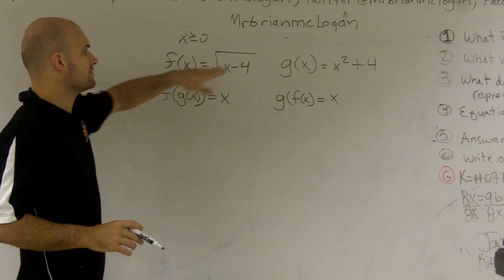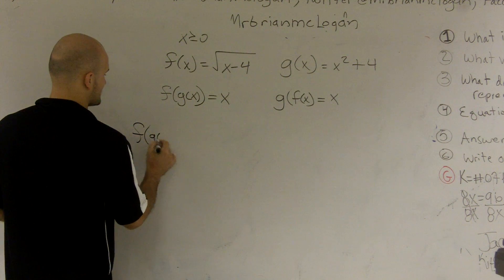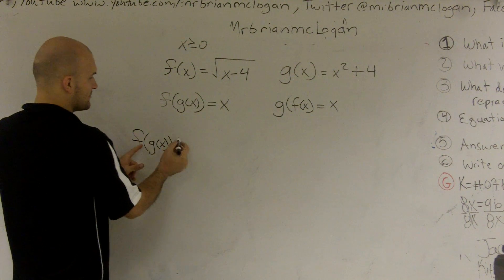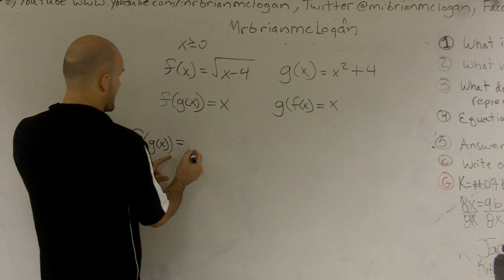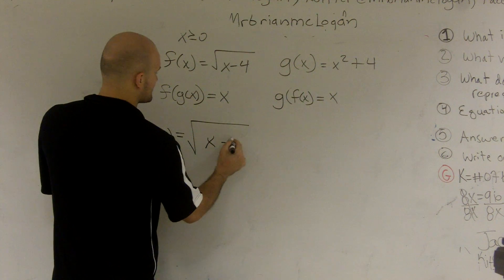So let's look at what would f of g of x look like. If I did f of g of x, what I'm going to do is just evaluate my f of x function for g of x. So I'm going to take my f of x function, which is square root of x minus 4.